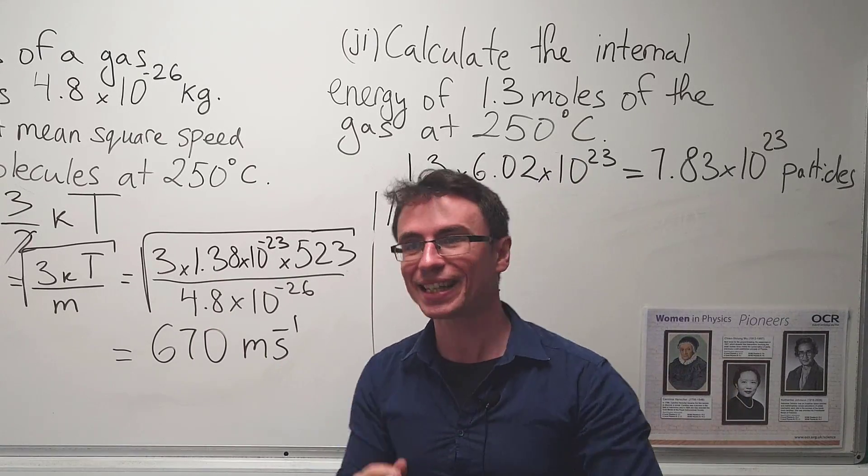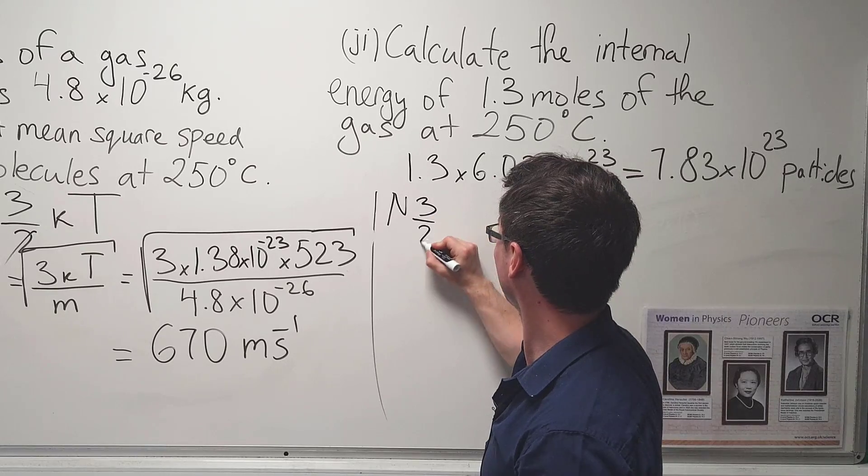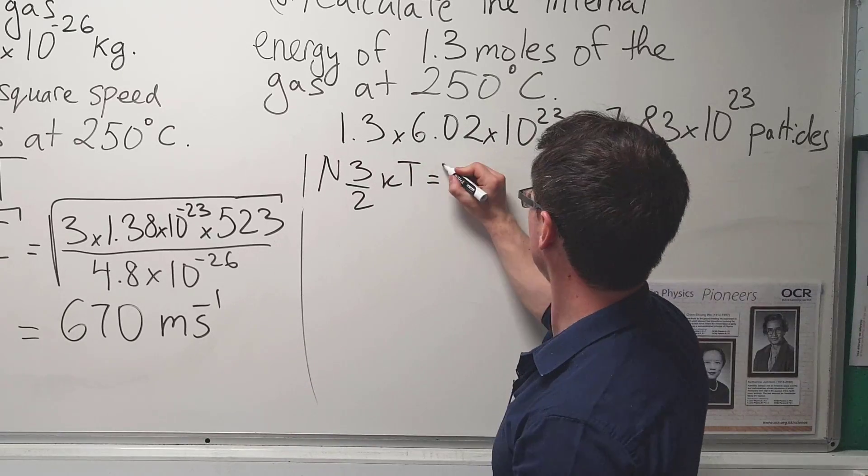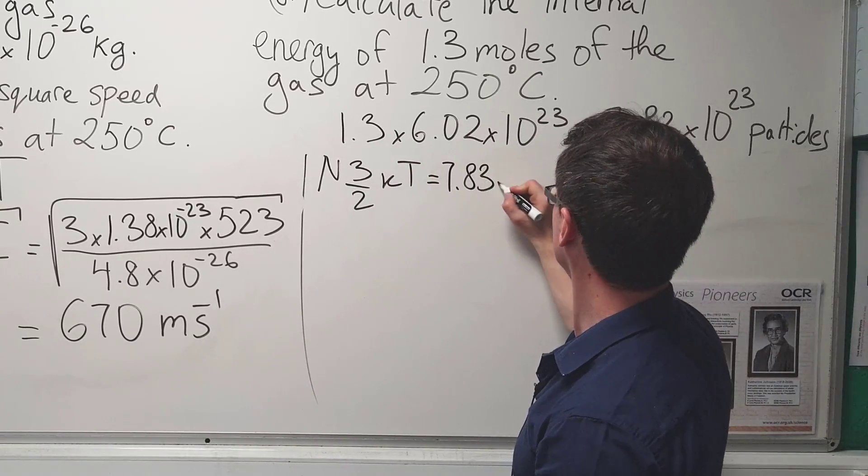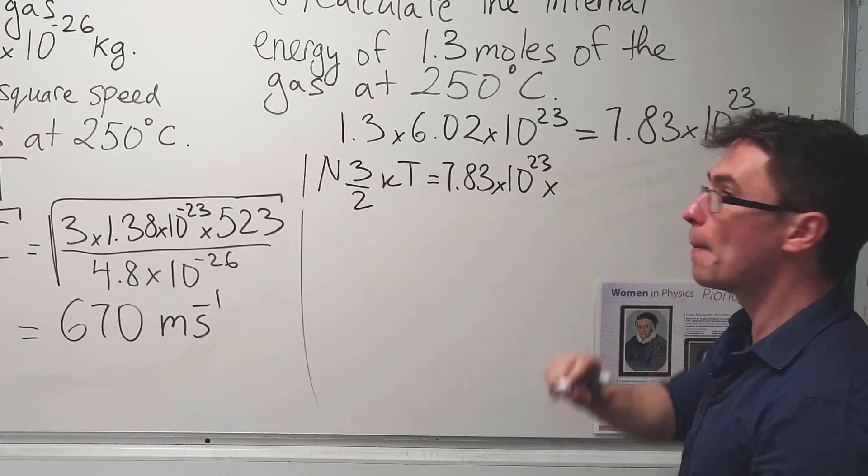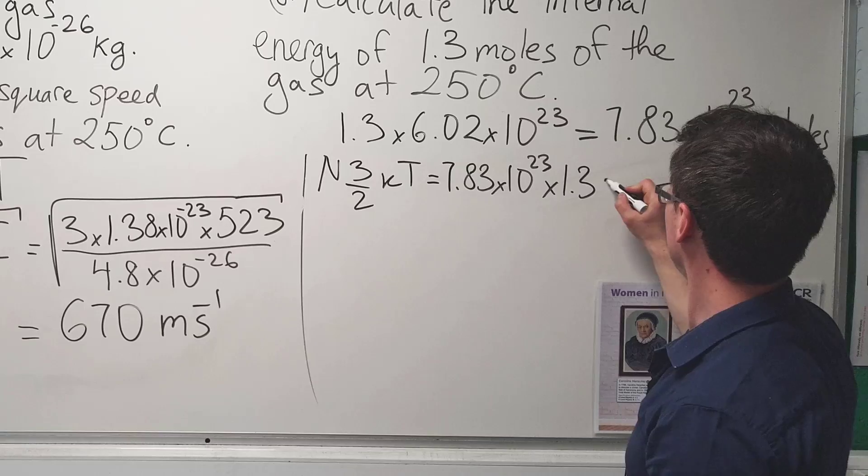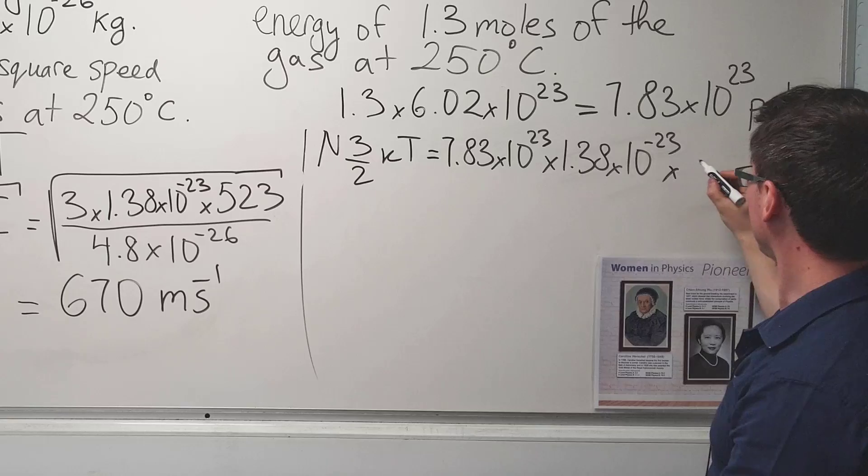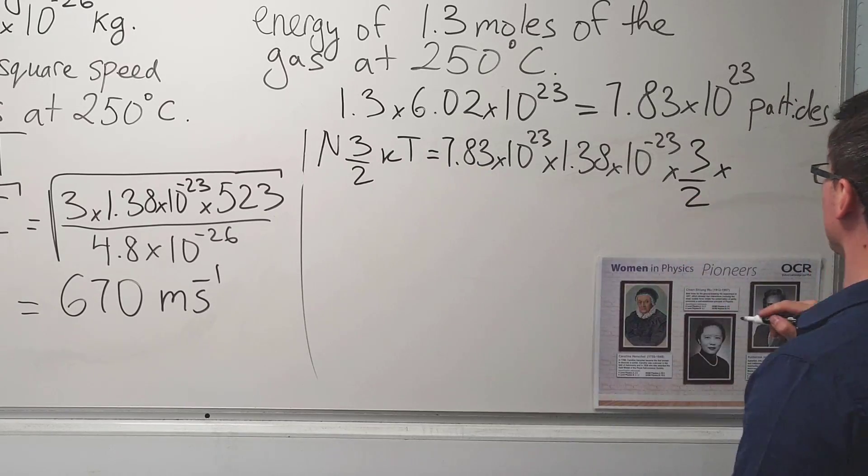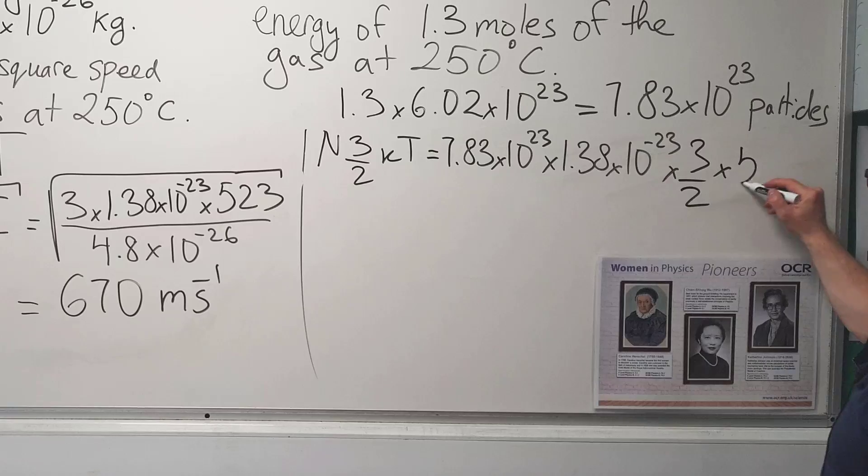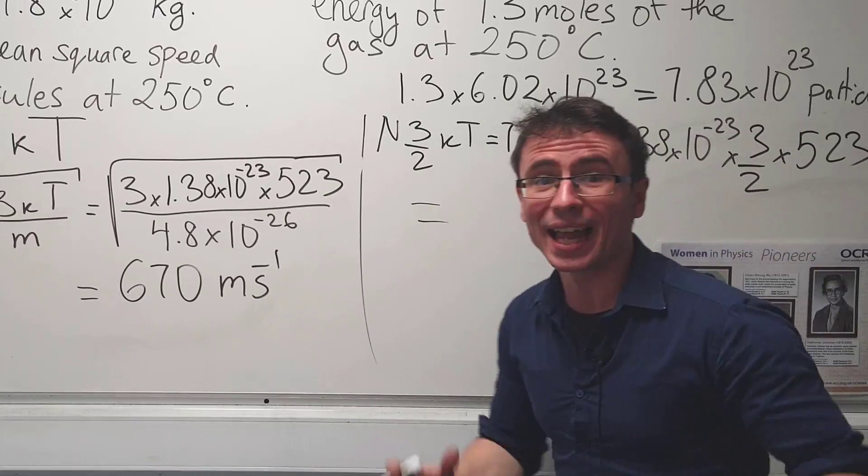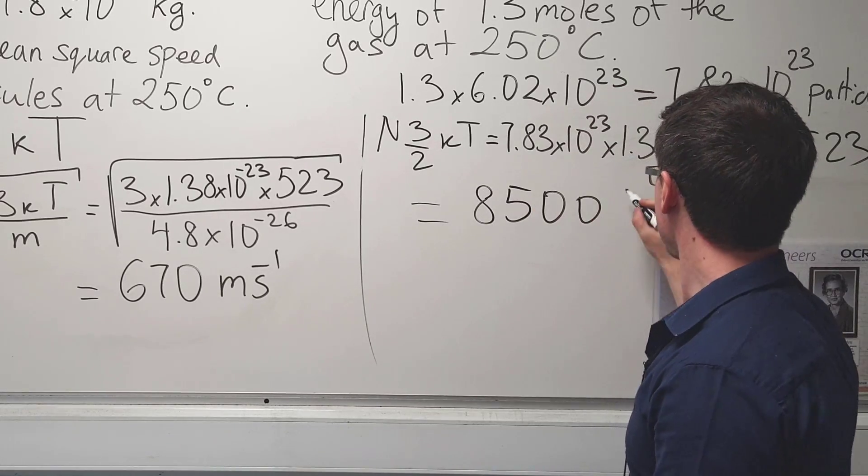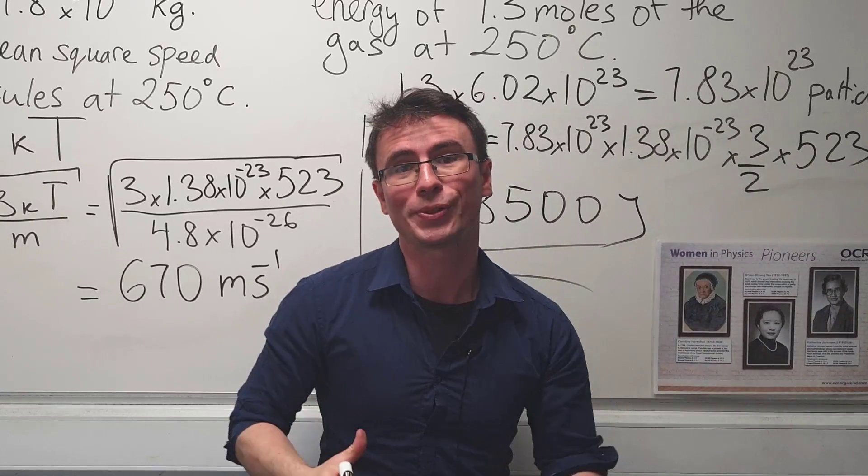multiplied by the energy of a single particle, which is 3/2 K times T. Meaning that the total internal energy will just be equal to 7.83 multiplied by 10 to the power of 23, multiplied by Boltzmann's constant, which is 1.38 times 10 to the power of minus 23. Let's not miss out the factor of 3/2 and let's multiply by the temperature in Kelvin, which is 523. And if we put this into a calculator, we're going to get around 8,500 joules up to two significant figures.